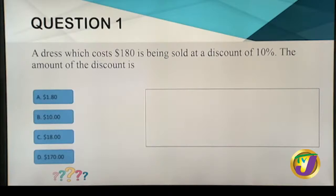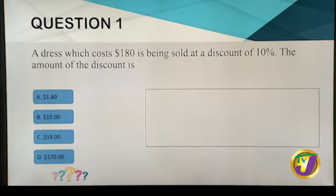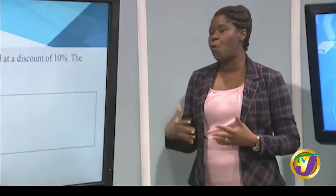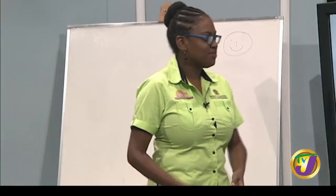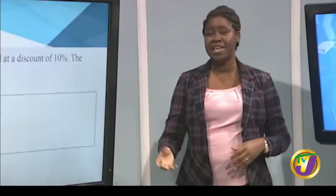Question one: a dress which costs $180 is sold at a discount of 10%. The amount of the discount is — let's find out what the question is asking. The key word here is 'discount.' When we think of discount, we're thinking about paying less for our goods — sometimes stores offer 10% or 15% discount during a sale.